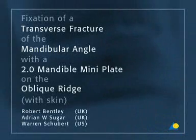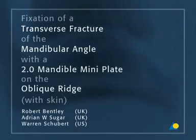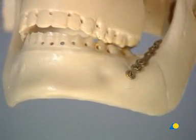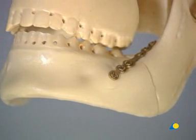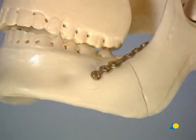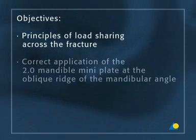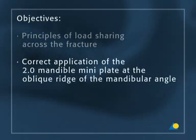A transverse fracture of the mandibular angle is treated with a 2.0 mandible mini plate positioned on the oblique ridge, as described by Champy. A model with a simulated skin cover is used. The objectives of this exercise are to understand the principles of load sharing across the fracture and the correct application of the 2.0 mandible mini plate at the oblique ridge of the mandibular angle.